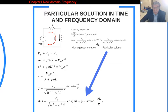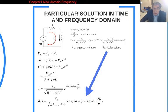What is the difference? The frequency does not change. Only two parameters will change: the amplitude of the sinusoidal function, and the angle of the sinusoidal function. Both the amplitude and the angle depend on the frequency of the independent source.